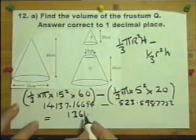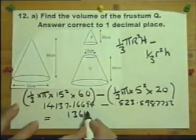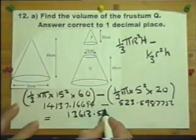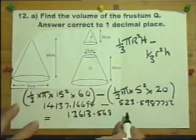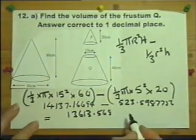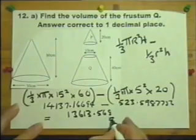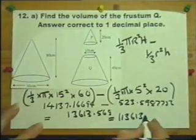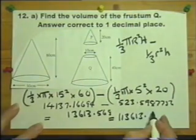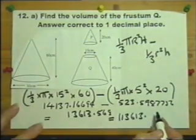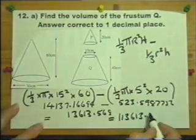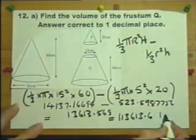I think 13,613.56, and actually it says to one decimal place. So therefore one decimal place is 13,613.6.